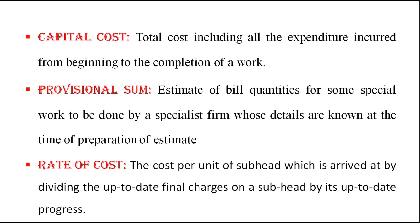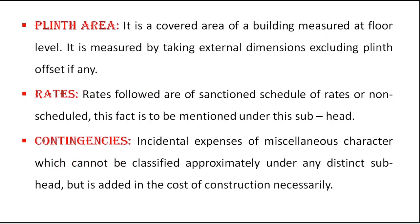Rate of cost: the cost per unit of a subhead, arrived at by dividing the up-to-date final charges on a subhead by its up-to-date progress. It is the total cost of a particular asset obtained by dividing the total charges by the up-to-date charges. Plinth area: the covered area of a building measured at floor level, measured by taking external dimensions excluding the plinth offset. That is what we call plinth area.